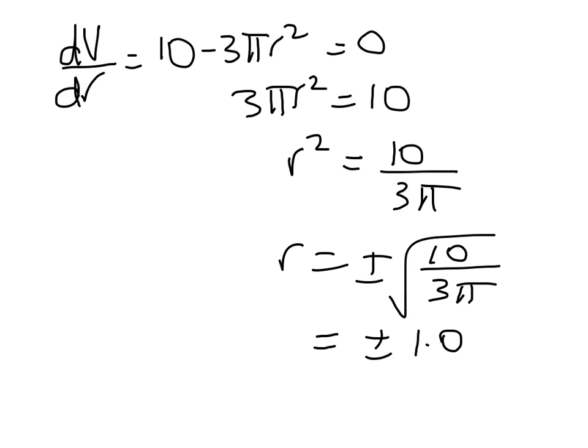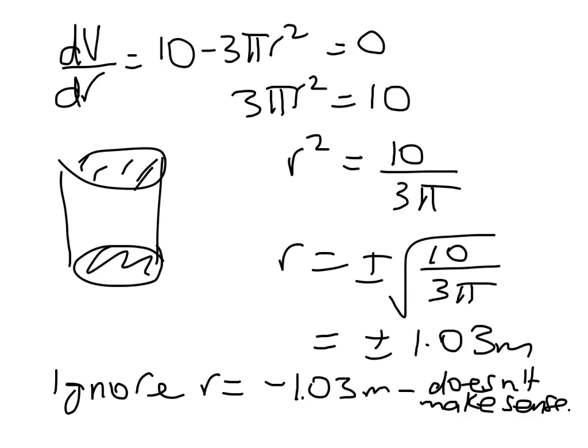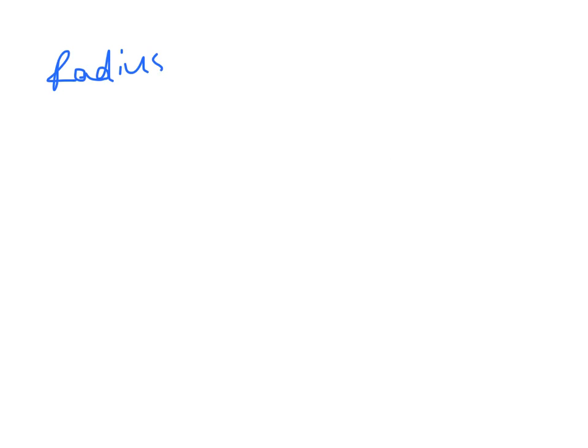Which equals plus or minus 1.03 meters. And we're going to ignore R equals negative 1.03 meters. It doesn't make any sense. We don't want to have a negative radius. So we have found the value of R that is going to maximize the volume of that cylinder if the surface area is 20 square meters. So just make sure when you do these questions always make sure that you've answered it in context and given meters. So I would probably just write a note that says something like this. Radius should be 1.03 meters to maximize volume.